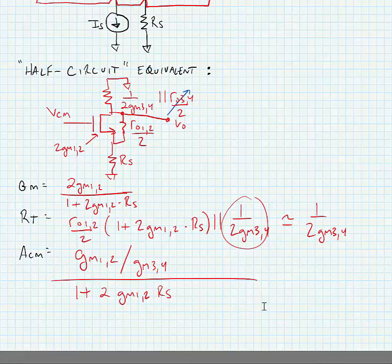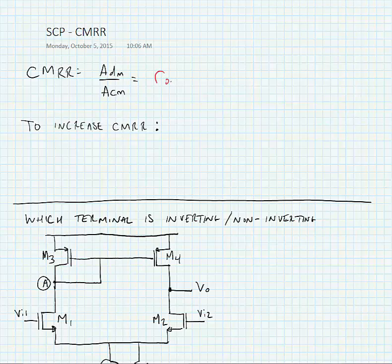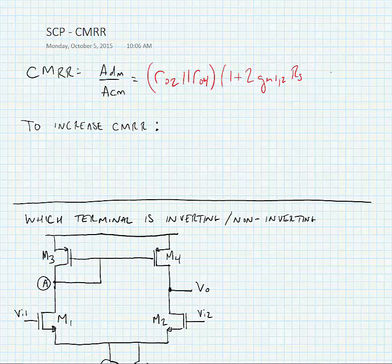We can now find the common mode rejection ratio by taking the ratio of the common mode gain and the differential mode gain. If we do this, we find that the CMRR is RO2 in parallel with RO4, times 1 plus 2GM12 times RS, times GM34.